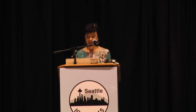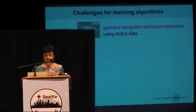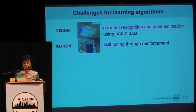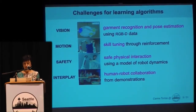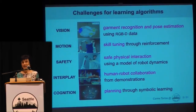I have grouped the challenges for learning algorithms in five categories. The first is visual learning, for garment recognition and pose estimation, usually using RGBD data. The next one is motion learning, for skill tuning. Safety issues are crucial when manipulators are placed near people, in physical interaction. Moreover, human-robot collaboration can be learned through demonstration. And finally, cognitive learning, meaning learning to plan, is important in order to get a sequence of skills.